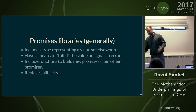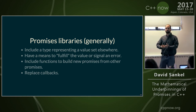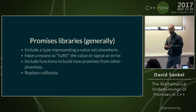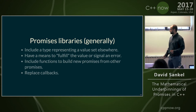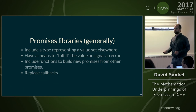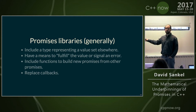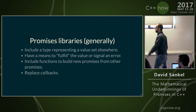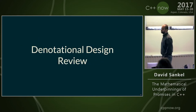Generally speaking, promises include some type representing a value set somewhere — in our library that's called 'promise'; in C++ it's std::future. There's a means to fulfill the value or signal an error, and you can include functions to build new promises from other promises — usually called 'then'. The idea is to replace callbacks. We're going to talk about constructing a promise library with these properties using denotational design.